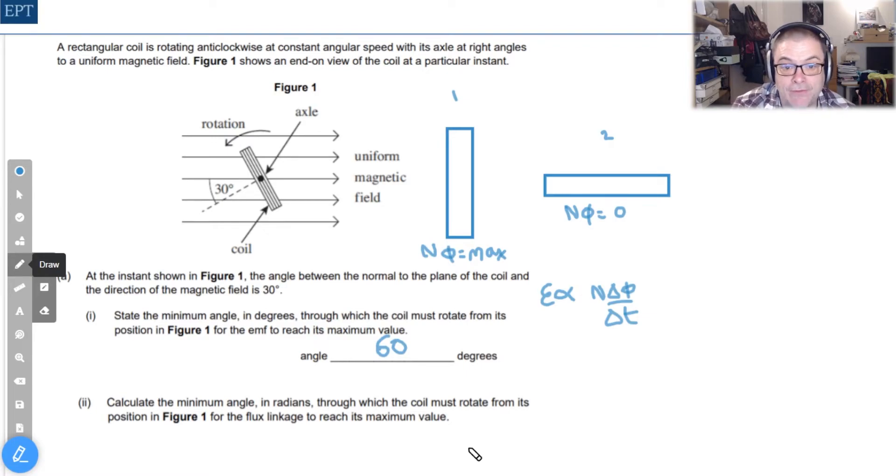Now we talked about that in the first part and I think you can remember the maximum flux linkage is in what I've called position one which therefore means that we have to turn our coil through 150 degrees.